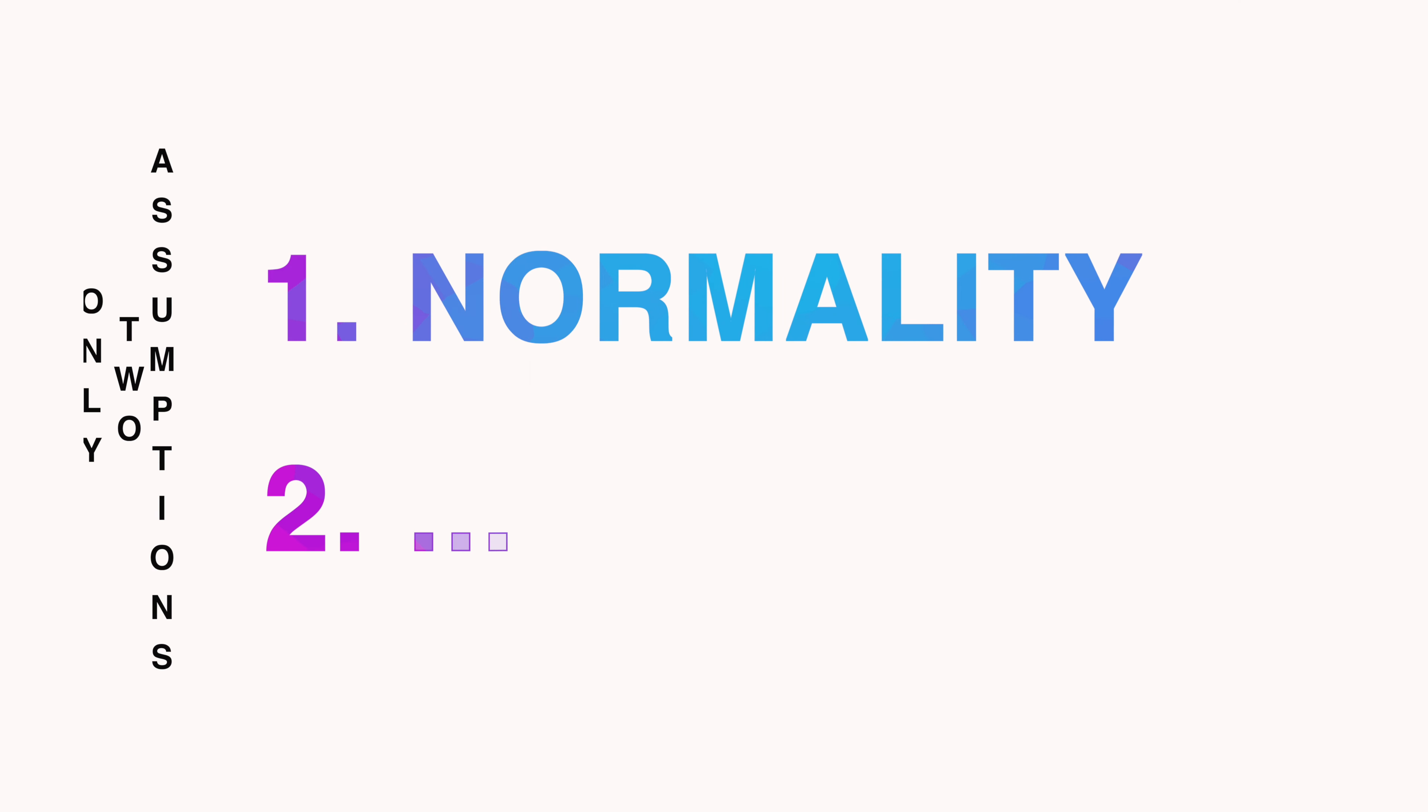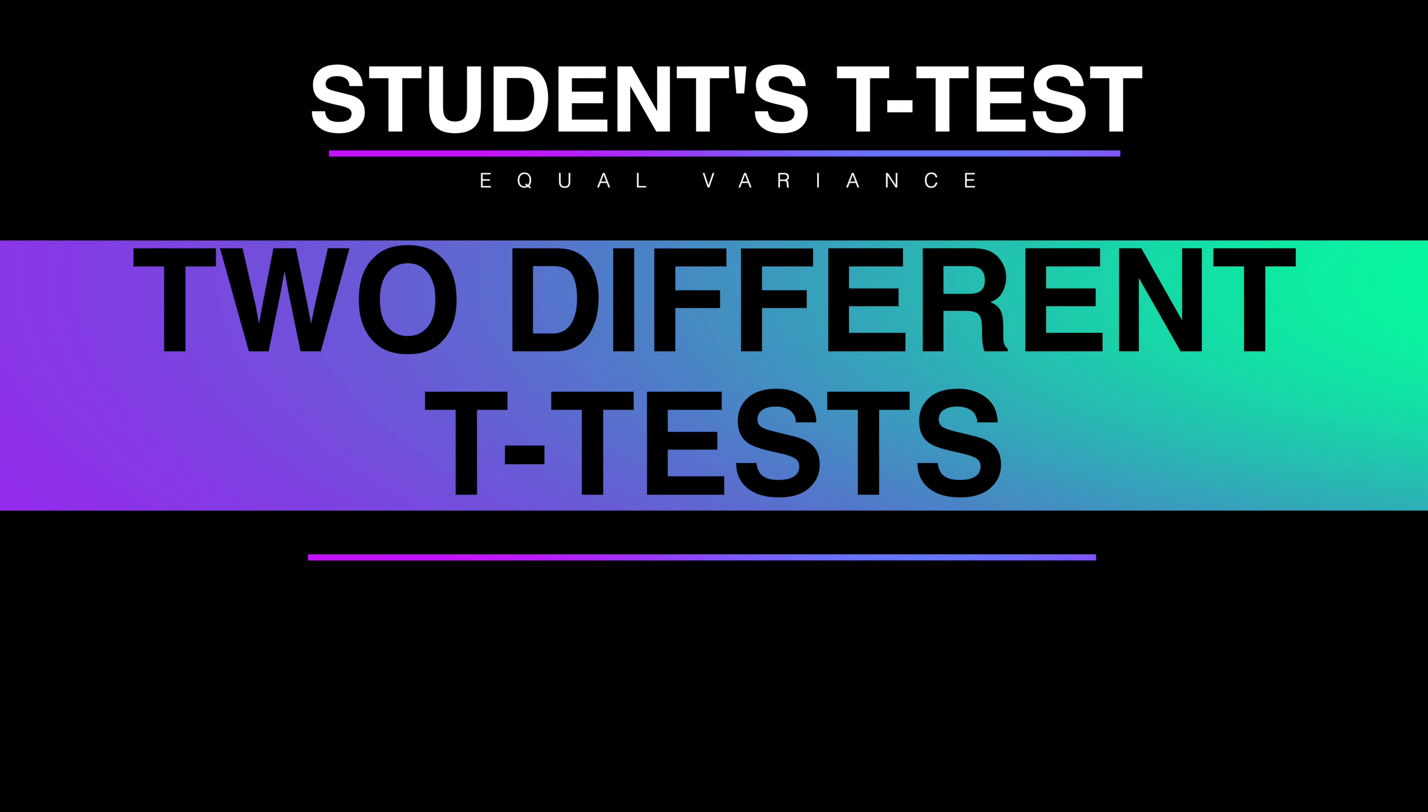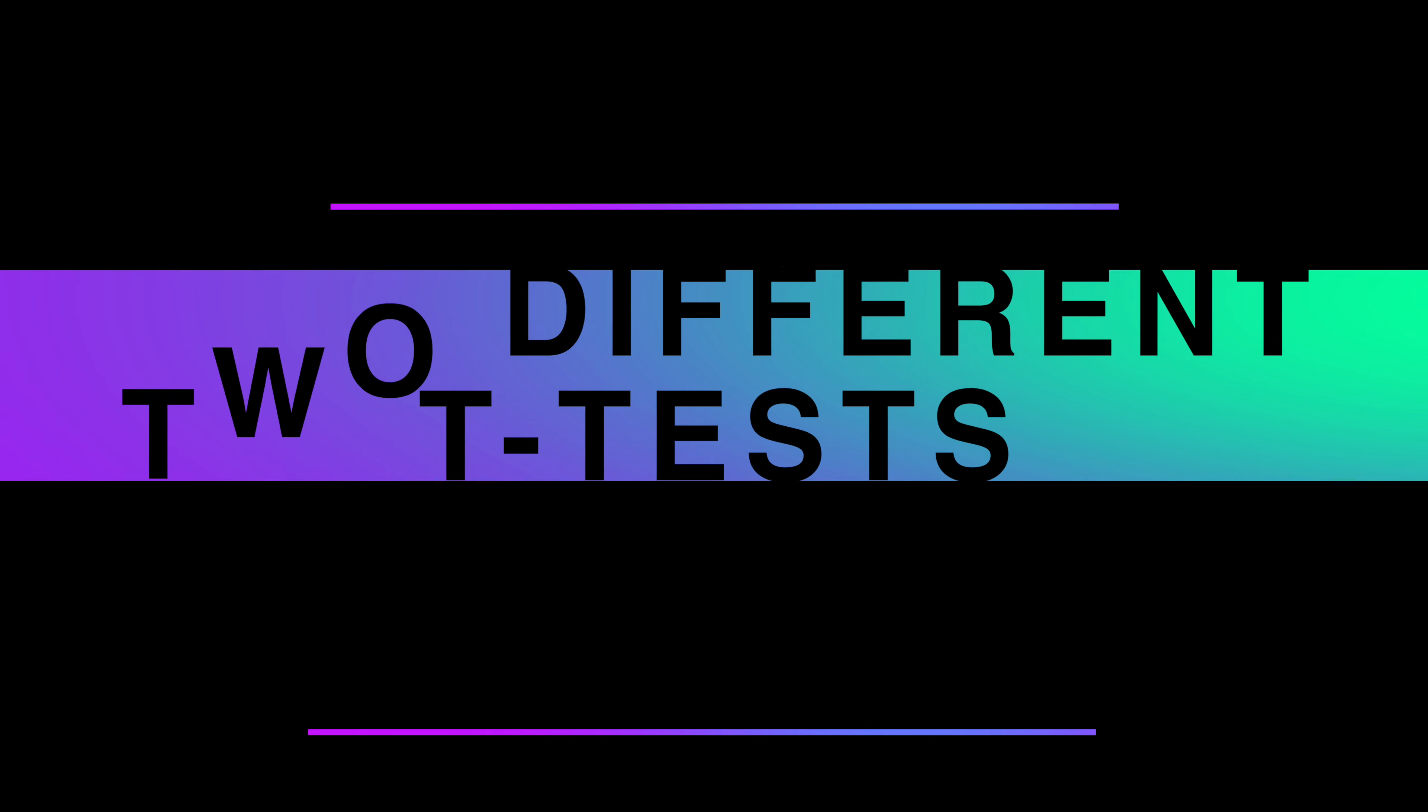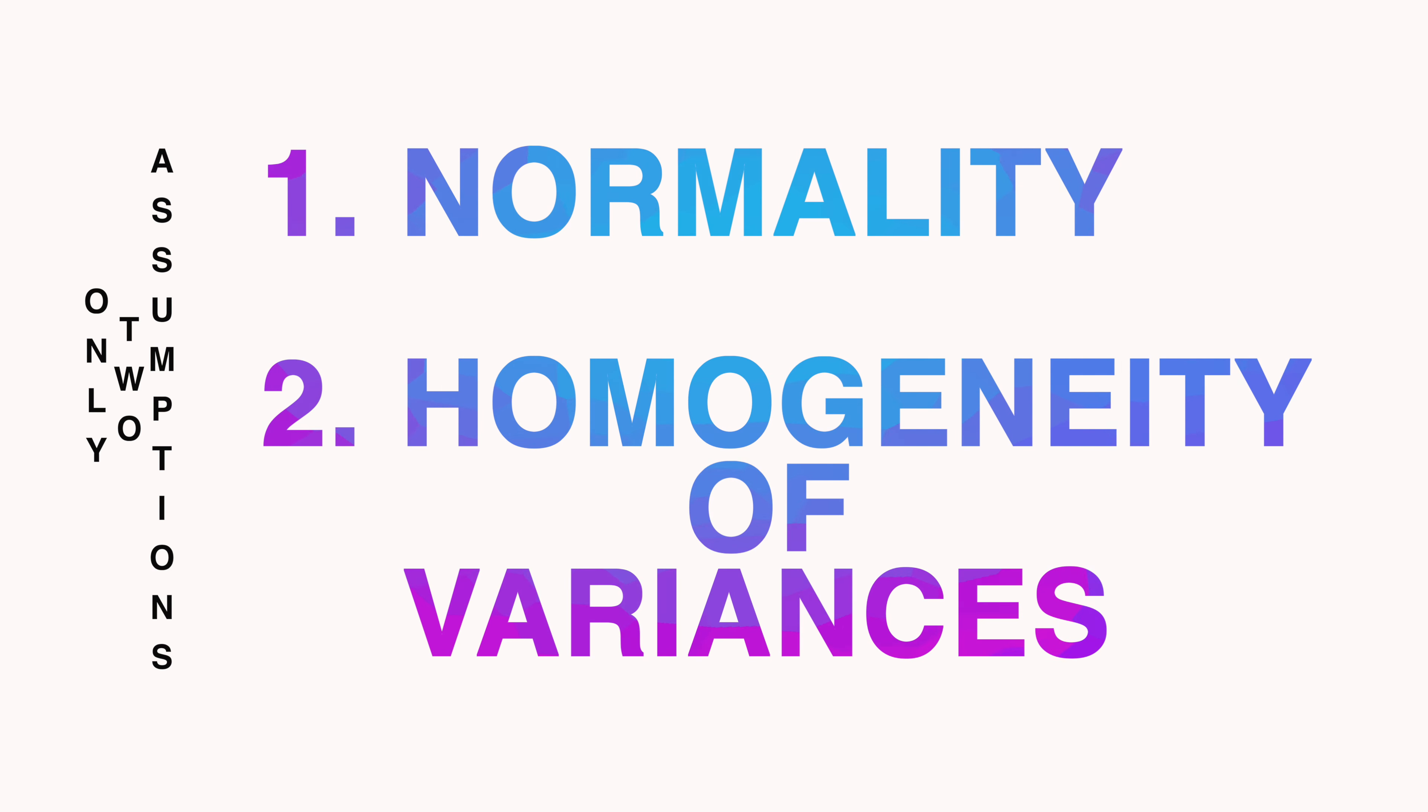However, the normality alone is not enough to make the right decision, because there are two different t-tests. Student's t-test and Welch t-test. In order to choose the right test, we need to understand variances of our data.